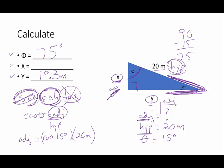Knowing my hypotenuse, looking for my opposite, I'm going to choose sine. The sine of theta is opposite over hypotenuse. So my opposite side is going to be equal to the sine of 15 times my hypotenuse of 20. And when I did that, I got 5.2 meters.